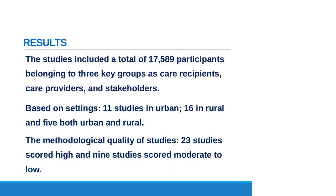A total of 17,589 participants belonging to three key groups — care recipients, care providers, and stakeholders — were included. Based on settings, 11 studies were done in urban settings, 16 in rural areas, and five included both urban and rural areas. Regarding methodological quality, 23 studies had a high score of four to five, eight studies had a moderate score of three out of five, and only one study scored low with a score of two. No studies were excluded based on methodological quality.